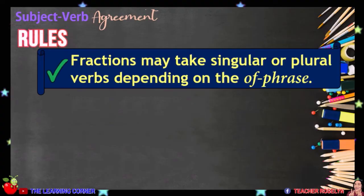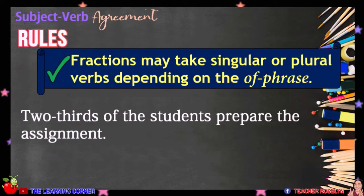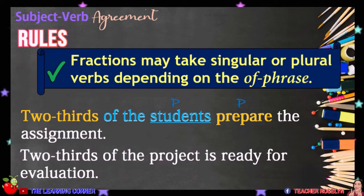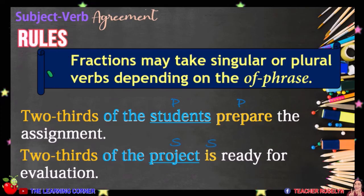Fractions may take singular or plural verbs depending on the 'of' phrase. For example, two-thirds of the students prepare the assignment — the 'of' phrase is 'of the students,' which is plural, so we use PREPARE. Another example: two-thirds of the project is ready for evaluation — the 'of' phrase is 'of the project,' which is singular, so we use IS.